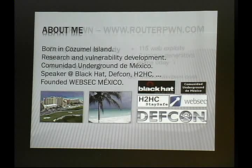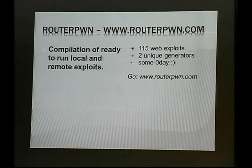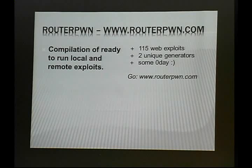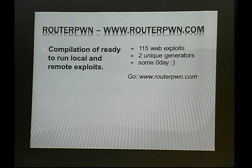This is RouterPwn. You can access it by going to the URL routerpwn.com. It's a web page — a compilation of ready-to-run local and remote exploits, mostly web exploits. It has 115 web exploits and two unique generators. Some of the exploits are still zero-day, and you can access it at that URL.